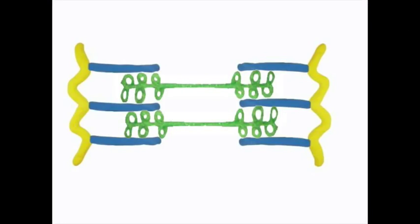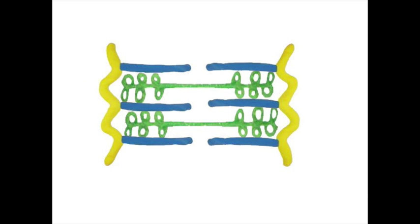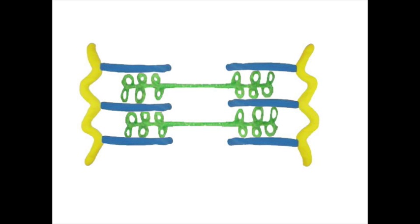As muscles contract, actin moves past the myosin, shortening the sarcomere. When the muscle is fully contracted, the actin overlaps.